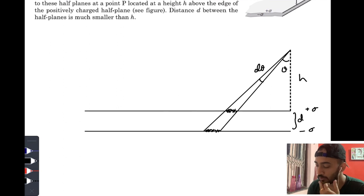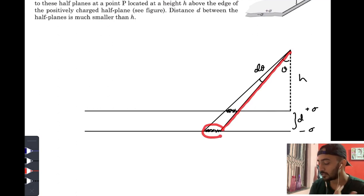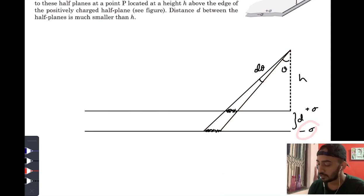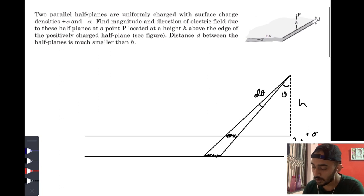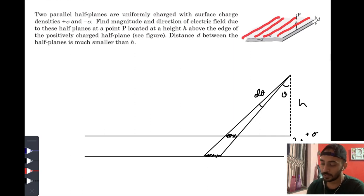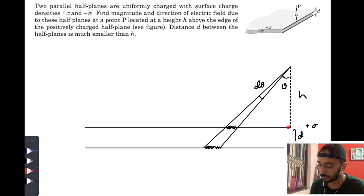This charge and that charge are not equal, but the field created by this charge at point P cancels out the field created by the other charge at point P. Because as there is some increase in distance, there is a similar increase in charge on the negative side, resulting in cancellation of the net electric field at P due to those two elements. We are dividing the whole half sheets into an infinite number of linear charges.